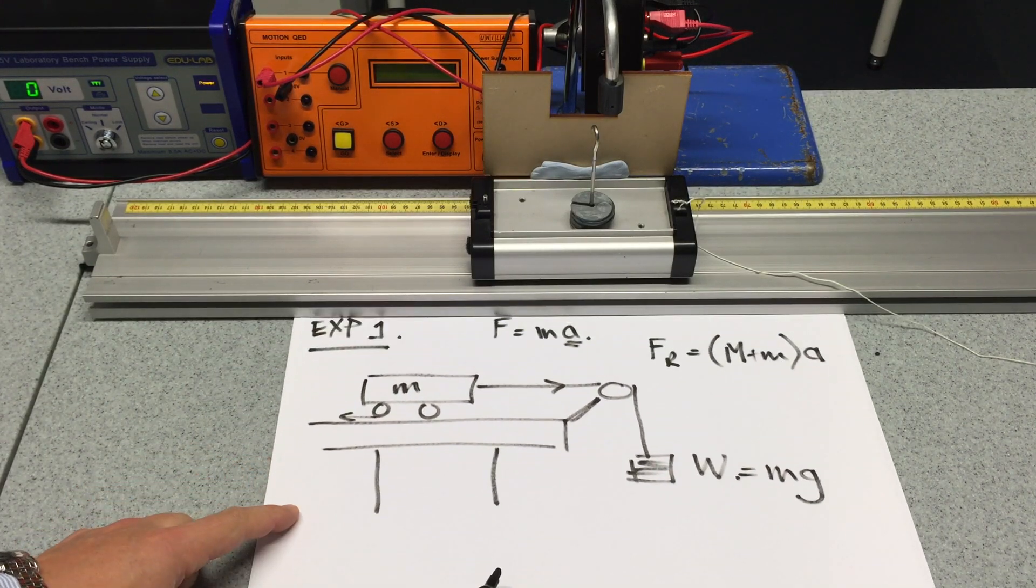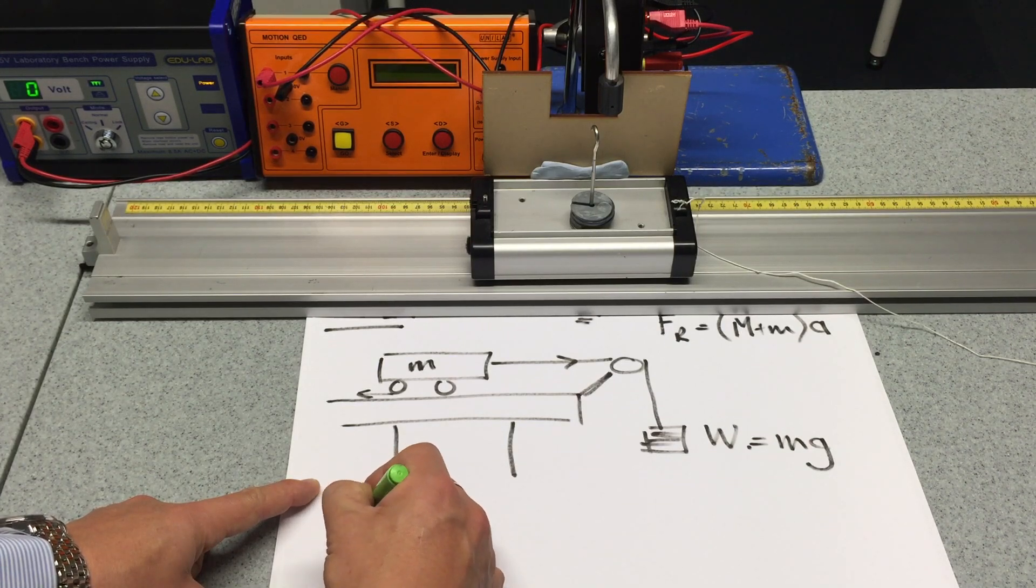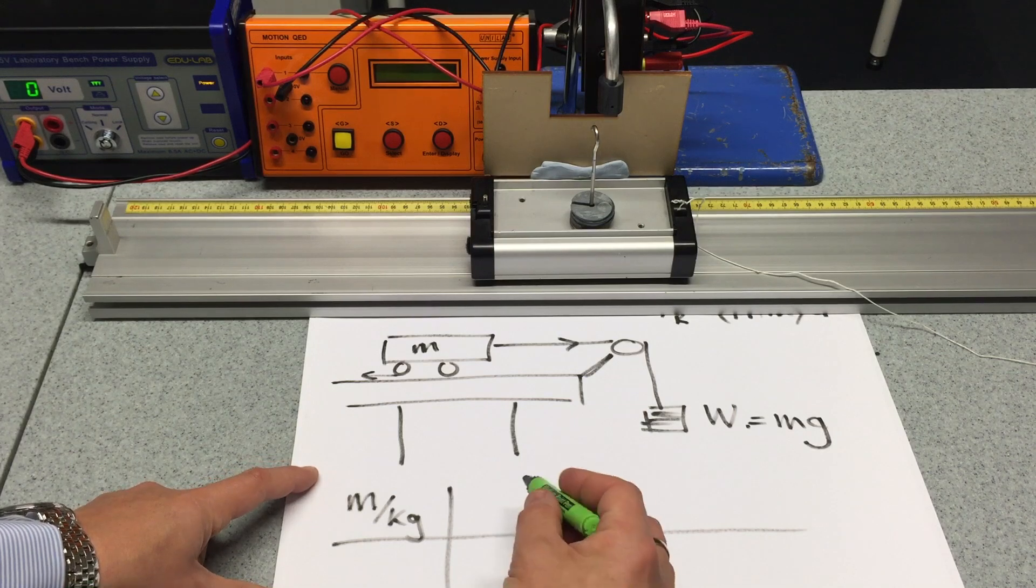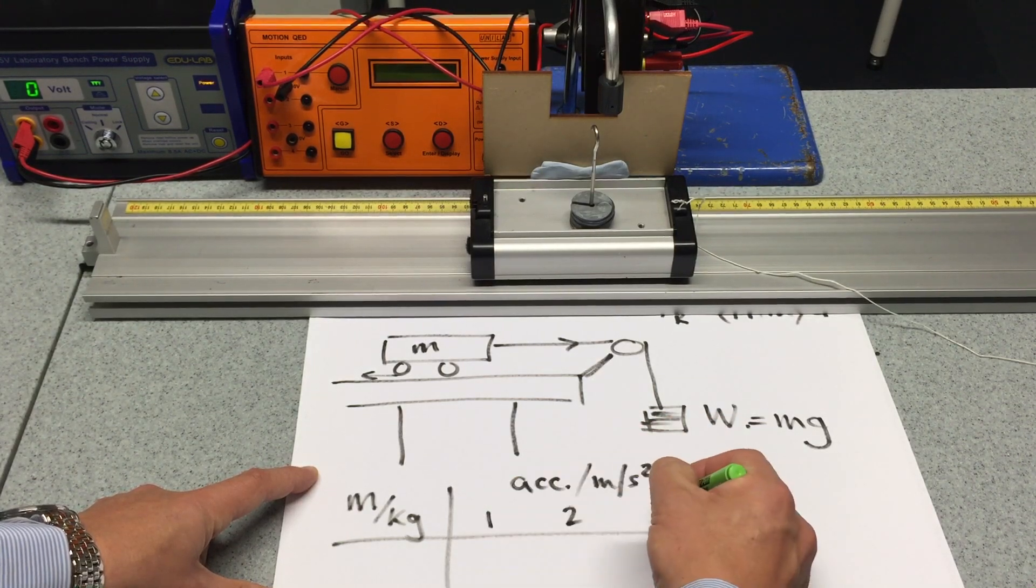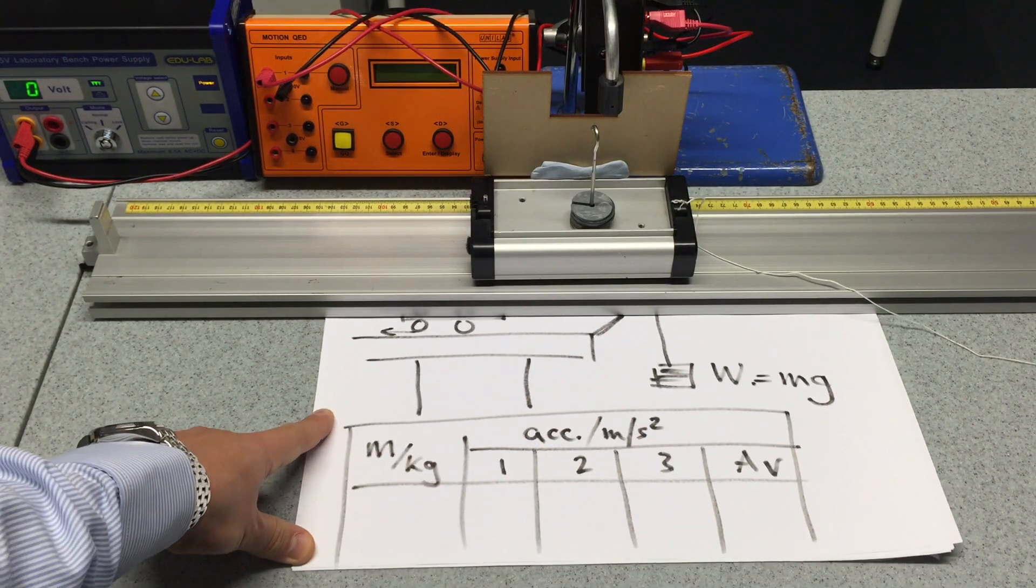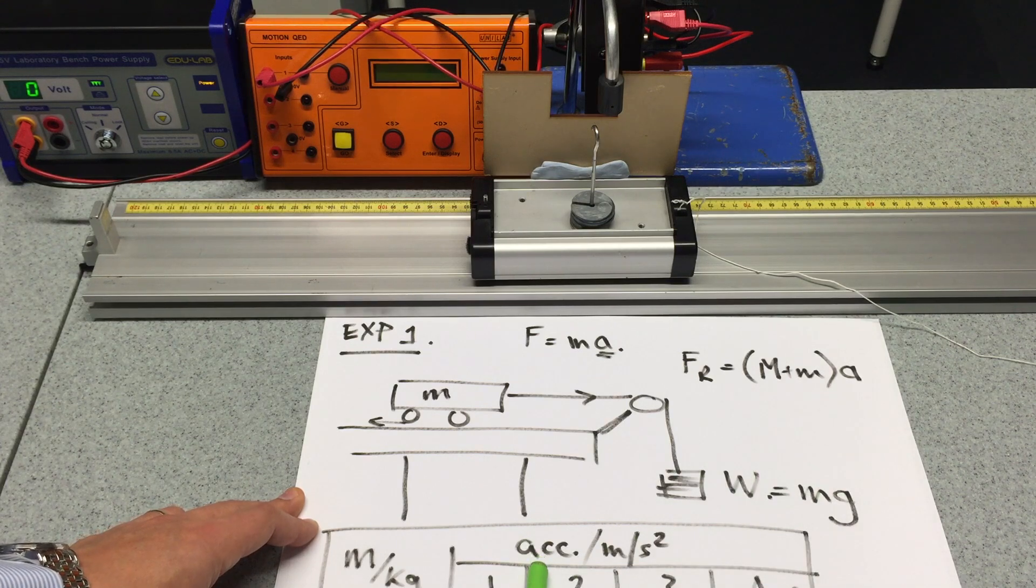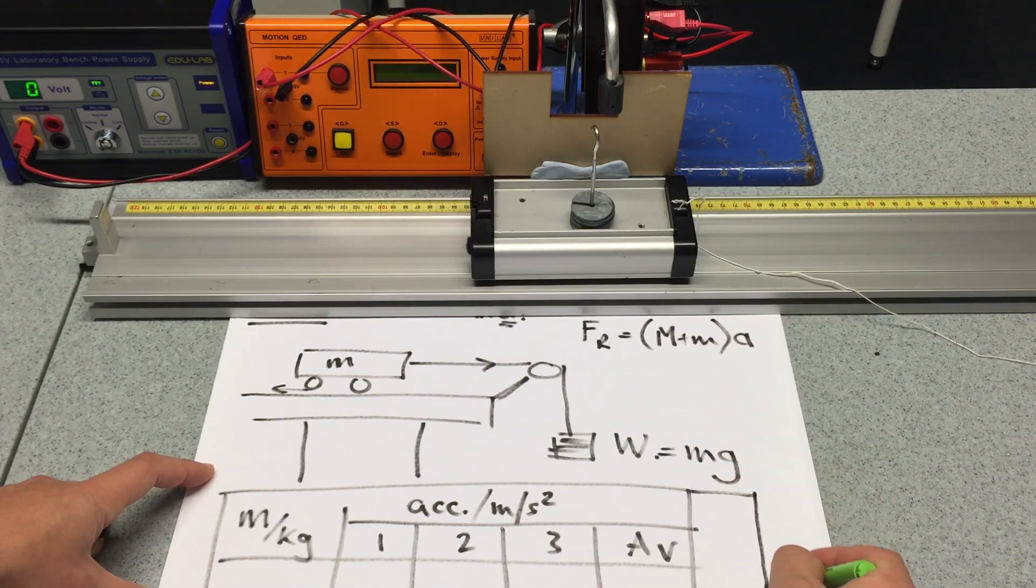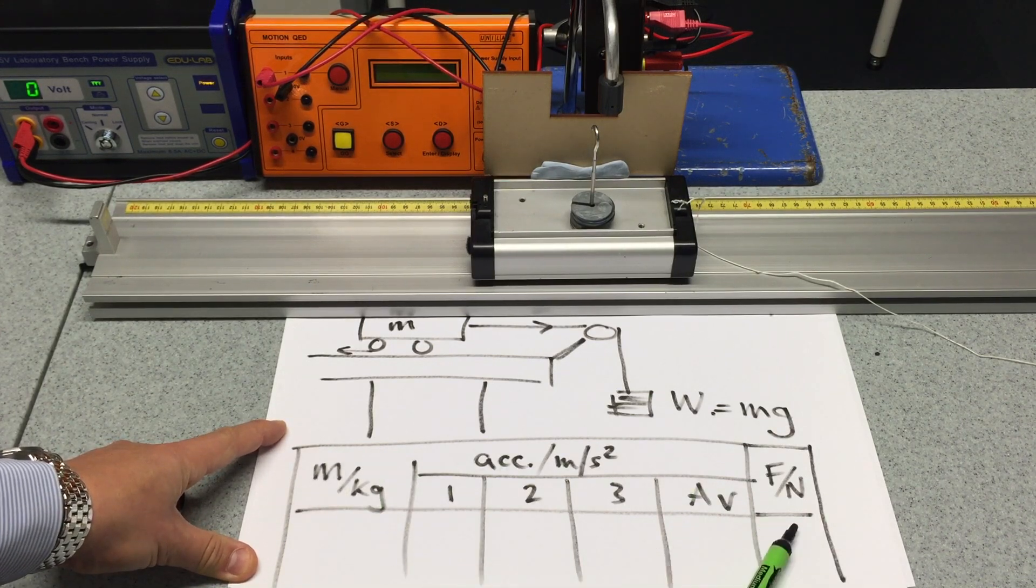What we're going to be looking for is how we are going to vary the accelerating masses. So we're looking to change the mass, I'll call it small m, in kilograms. So there's my independent variable. And we're looking at what the acceleration is, in meters per second squared, once, twice, three times, and an average. And so there is my table of results. And that's what we're going to be investigating. We're going to look at how this mass here, the accelerating mass, or the accelerating force, changes the acceleration. So probably it's worth making another column which looks at this force in newtons, which is very simply just mg.